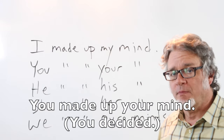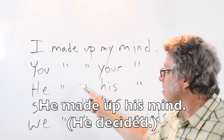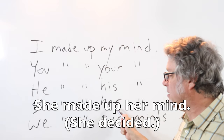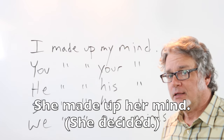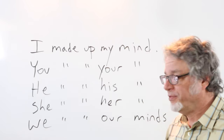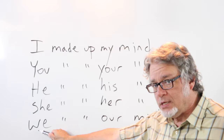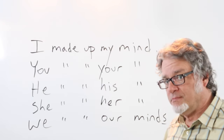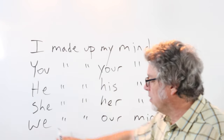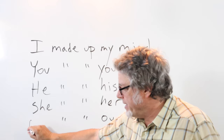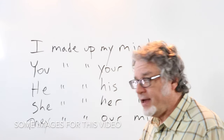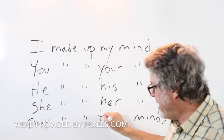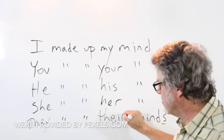I made up my mind. You made up your mind. He made up his mind. She made up her mind. With the plural: we made up our minds — usually there's an 's' there. Or you could use 'they': they made up their minds.